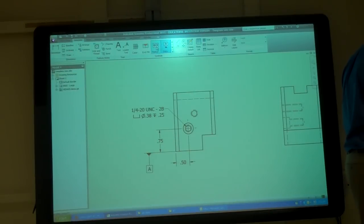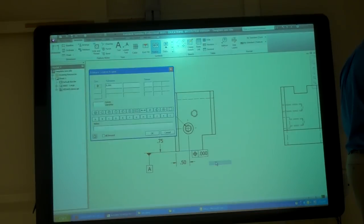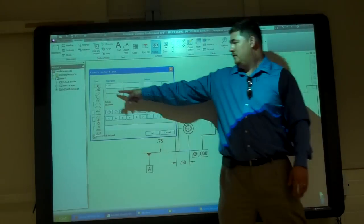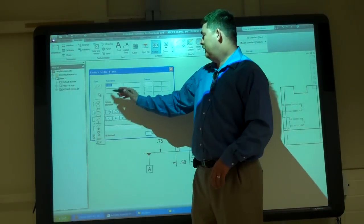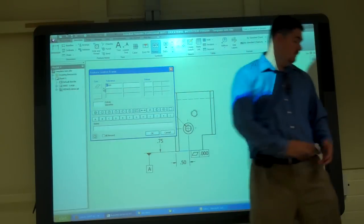Also then, feature control frames—same thing. Pick the edge, right click, continue. Go here and you can pick the symbol. So that bottom one would be probably flat within .01.